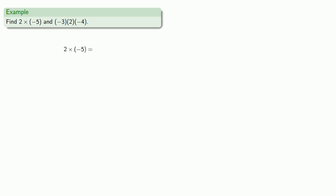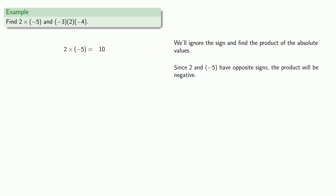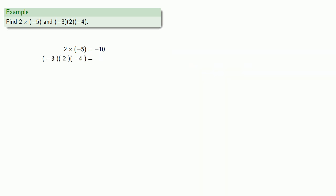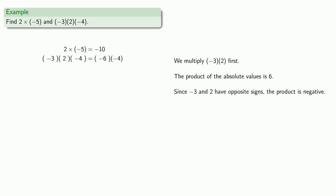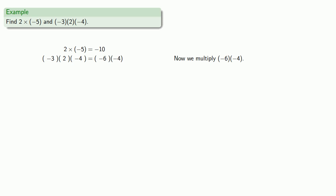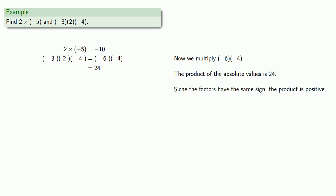For example, 2 times negative 5: ignore the sign and find the product of the absolute values — 2 times 5 is 10. Since 2 and negative 5 have opposite signs, the product is negative 10. For a multi-step example, multiply negative 3 and 2 first: the product of the absolute values is 6, and since negative 3 and 2 have opposite signs, that product is negative 6. Now multiply negative 6 and negative 4: the product of the absolute values is 24, and since the factors have the same sign, the product is positive 24.